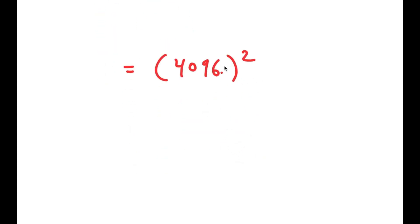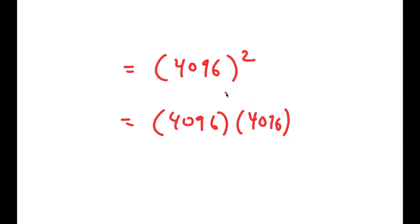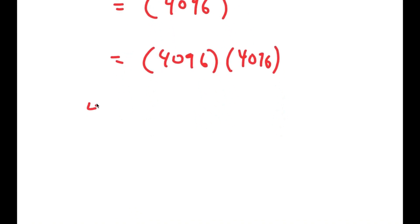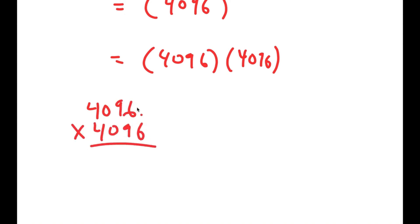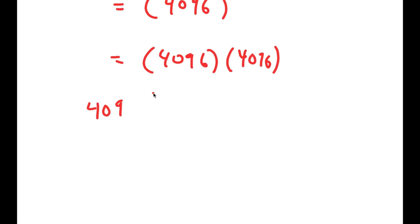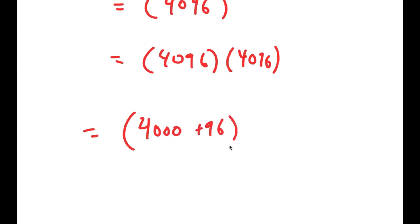Now, 4,096 squared is the same thing as 4,096 times 4,096. What most people would do is just multiply this using the conventional method — however, that takes way too long and it's really easy to make an error. So instead, to more easily solve this, I'm going to write this as 4,000 plus 96 times 4,000 plus 96.